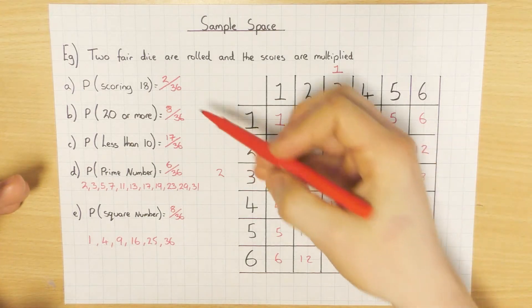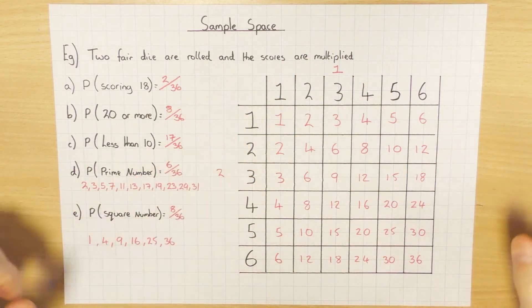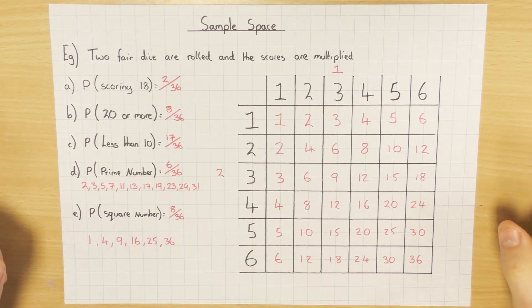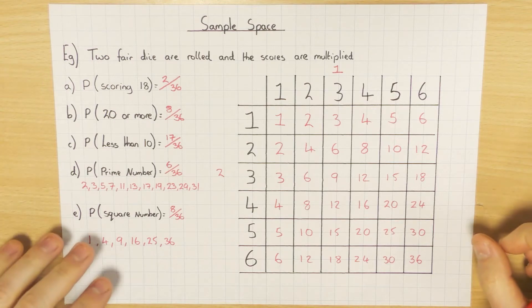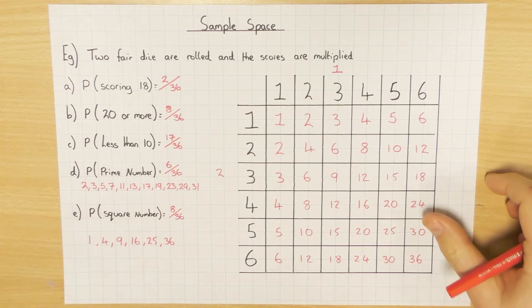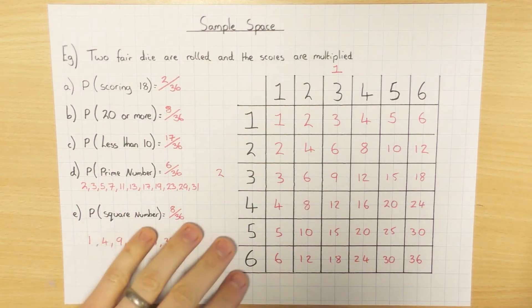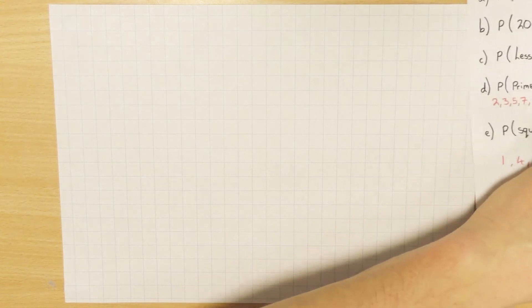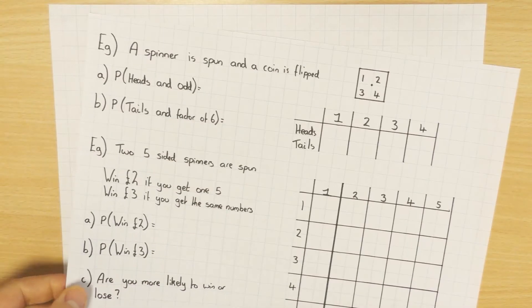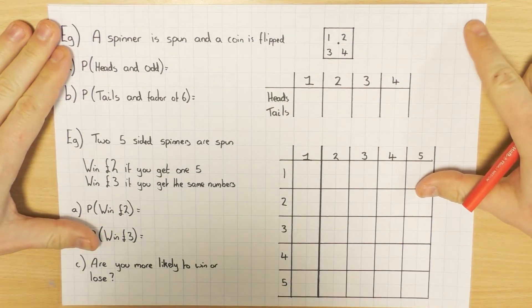That's why a sample space is so useful - it makes it very easy to calculate probabilities because you have every single possible outcome available to you. There are a few other ways you can draw a sample space, so here are two more examples.